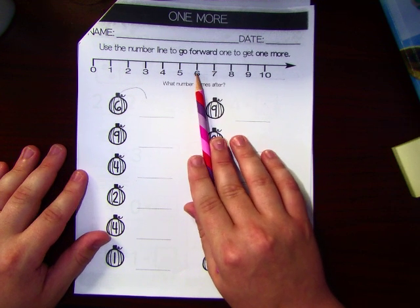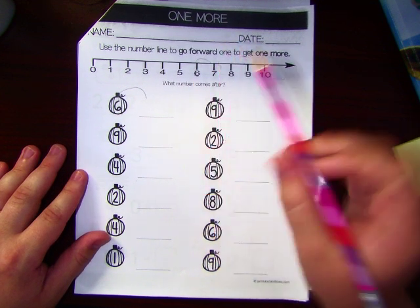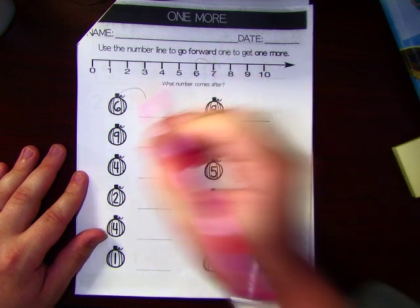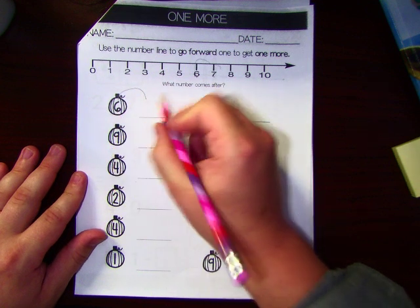You hop like a frog. Go to the right. One More Than 6 would be, that's right, 7. One More is 7.